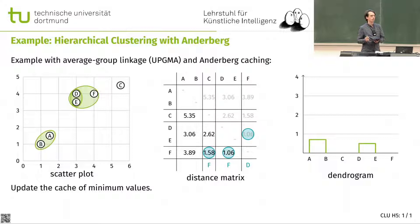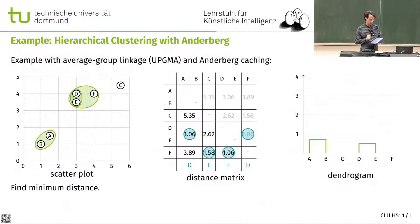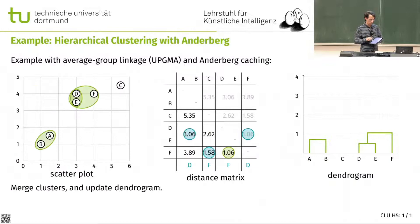I have to verify if my cache is still valid. I have to recompute this one, which will be DE. I would need to check if any of the others changed, but these values are worse, so the cache is good on that. That is my new cache — I can find the new minimum, which will be D and F, and I'm going to merge them.